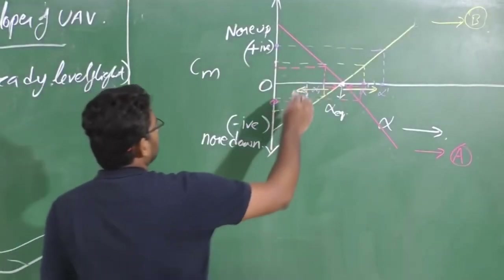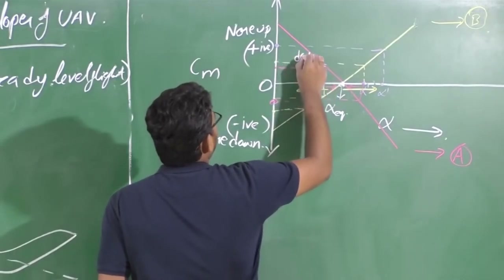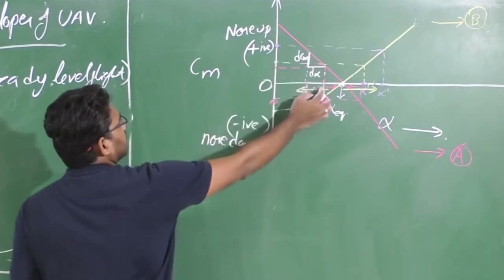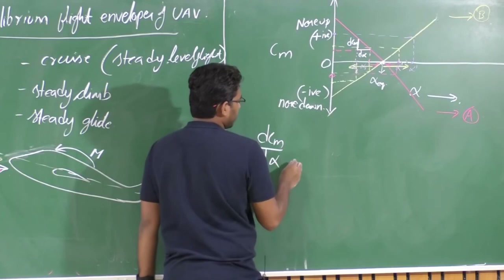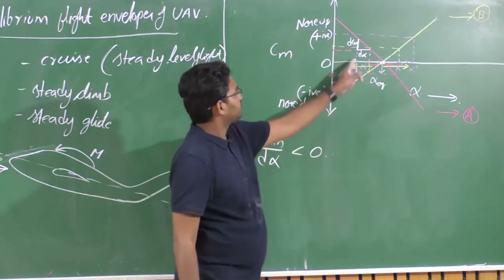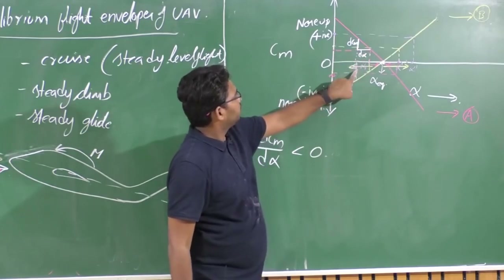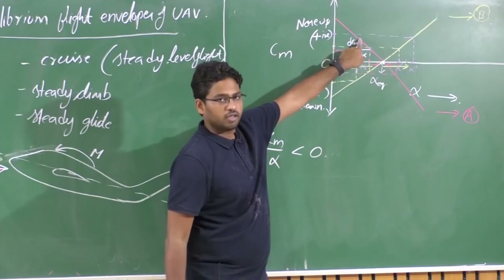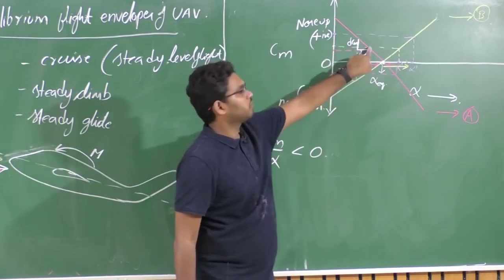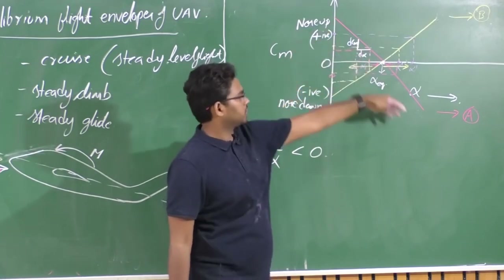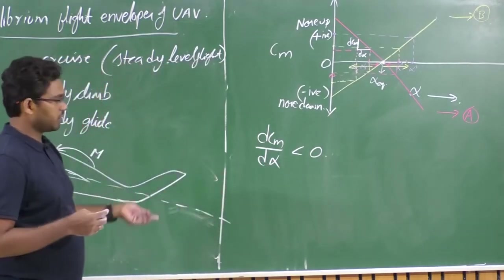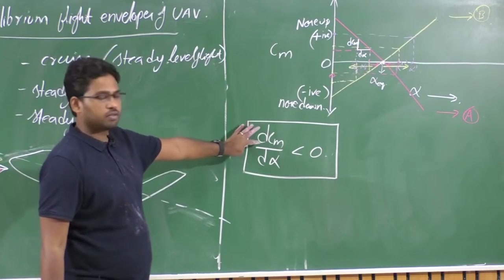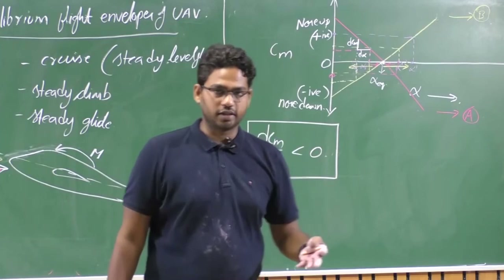One important condition we can observe is the slope — the change in pitching moment due to change in alpha. At alpha double prime (lower alpha), there is a higher pitching moment, and at alpha prime (higher alpha) there is a lower pitching moment — so the change is negative. There is a negative slope. The Cm variation with respect to angle of attack must be negative: dCm/dα < 0. This is an important condition needed for longitudinal static stability.